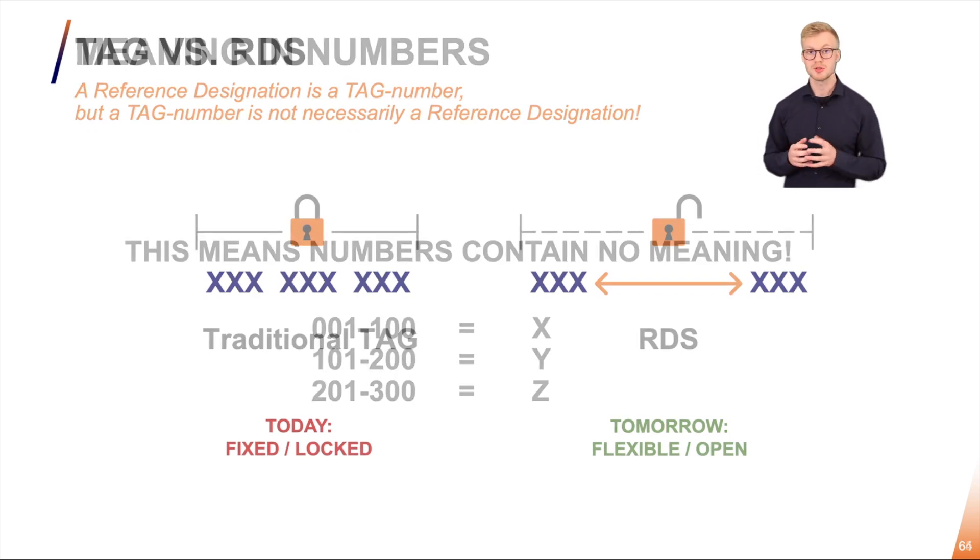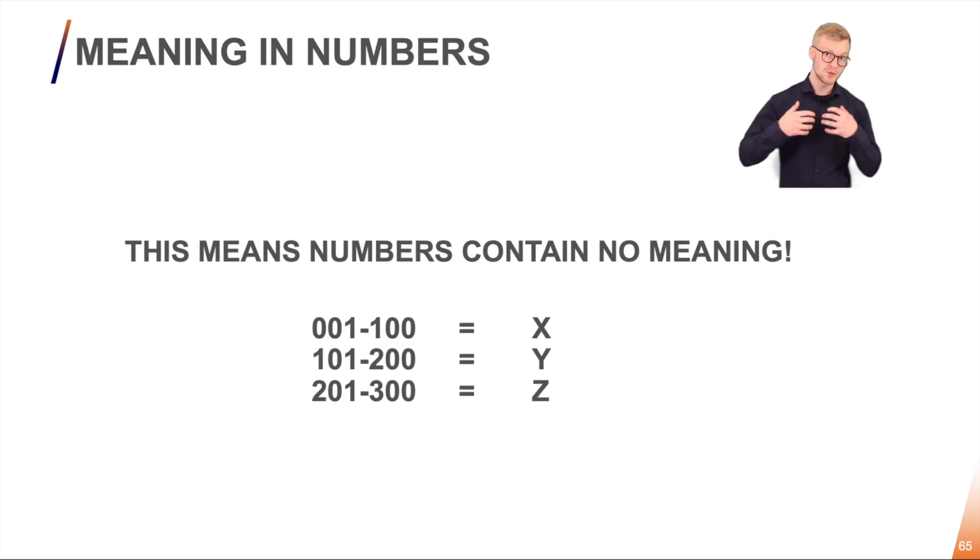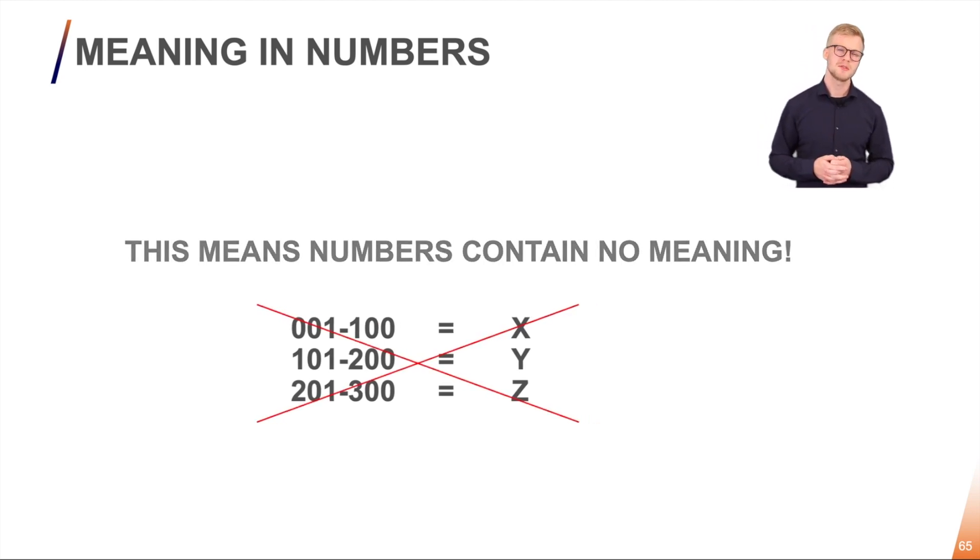Furthermore, we also see that people often tend to put meaning into numbers. So from 1 to 100 means one thing, from 101 to 200 means another thing, so on and so forth.